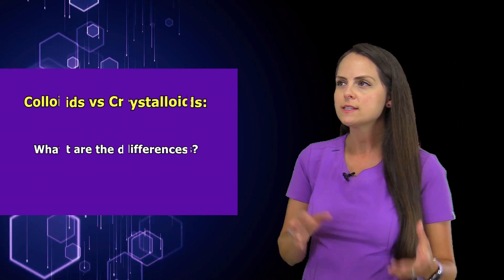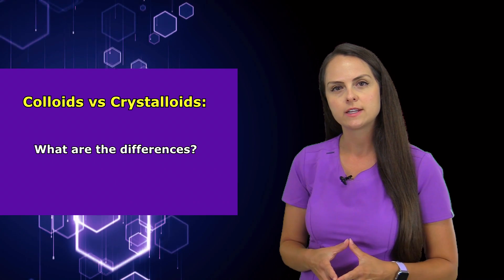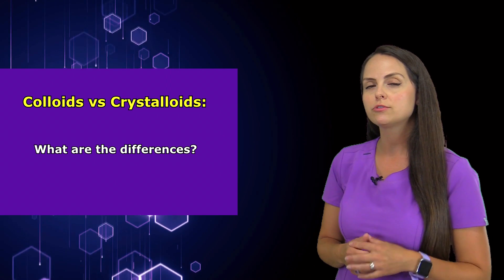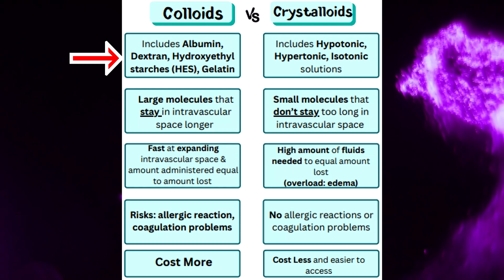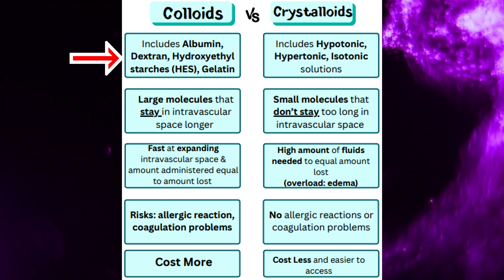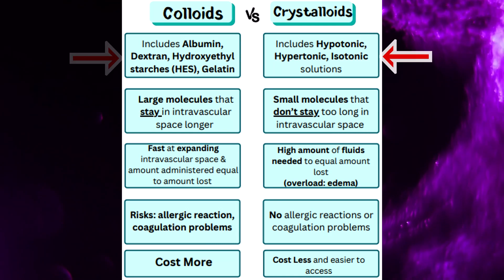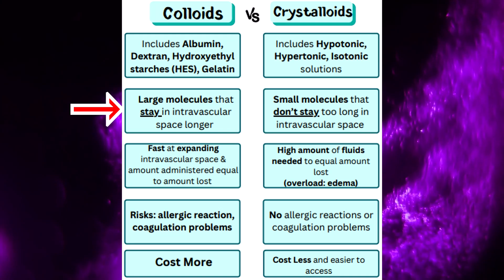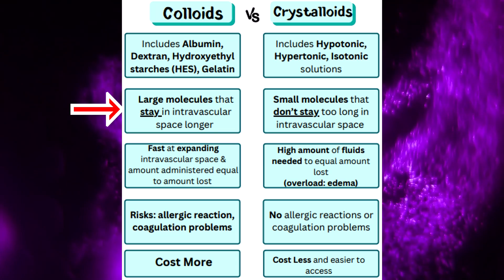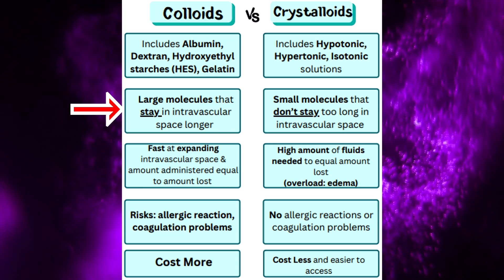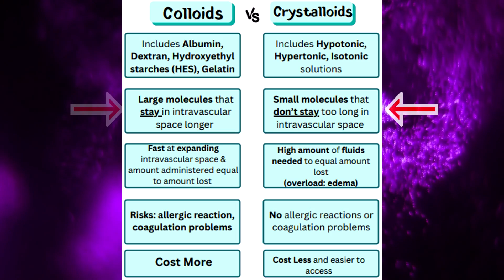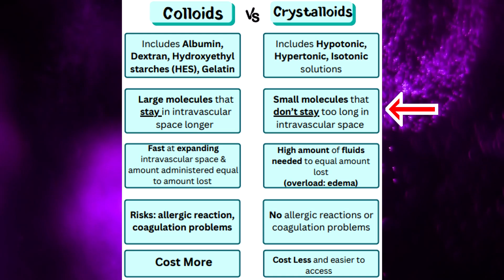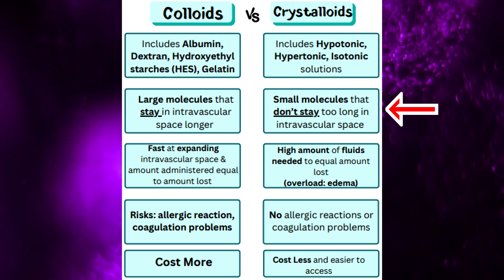You may be wondering what are the differences between colloids and crystalloids. Colloids include albumin, dextran, hydroxyethyl starches, and gelatin, while crystalloids include hypotonic, hypertonic, and isotonic solutions. Colloids are large molecules that stay in the intravascular space longer, creating oncotic pressure to pull water into that space, while crystalloids are small molecules that don't stay as long and don't create that same pulling effect.